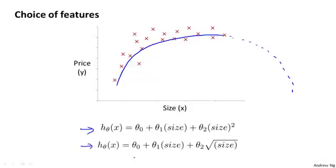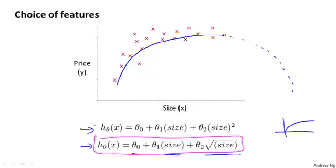Just to give you another example of a reasonable choice, another reasonable choice might be to say that the price of a house is theta zero plus theta one times the size and then plus theta two times the square root of the size. The square root function is this sort of function. And maybe there will be some value of theta one, theta two, theta three that will let you take this model and fit a curve that looks like that and goes up but doesn't come back down, sort of flattens out a bit and doesn't ever come back down.